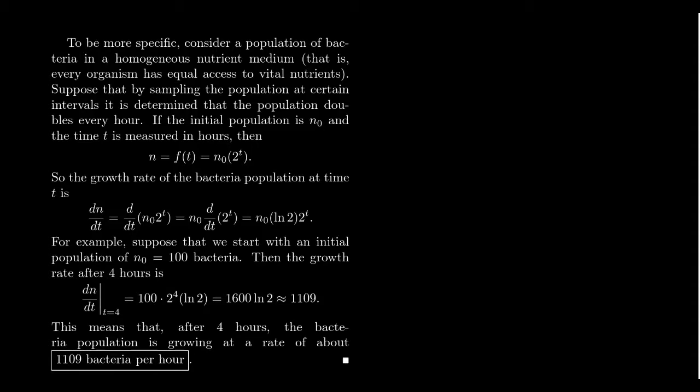So this bacteria doubles its population every hour. Very fast growing bacteria here. If the initial population is giving us some N sub zero, so do we start off with five bacteria, seven bacteria, a million bacteria, a single bacterium, what's going on here? If we have this initial population, that tells us that then F of T will look like N sub zero times two to the T.